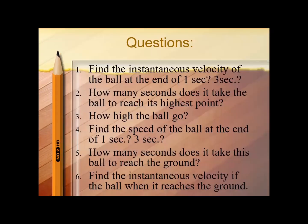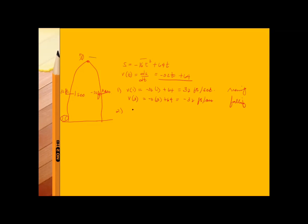Question number two: how many seconds does it take the ball to reach its highest point? At the highest point, the instantaneous velocity is zero. So if V(t) = 0, then 0 = −32t + 64. Solving: 32t = 64, so t = 2 seconds. The ball reaches its highest point at the end of two seconds.